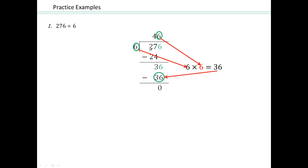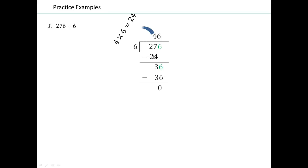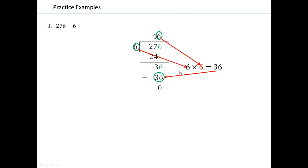No matter how many digits it is, you have to use the same process. Let's quickly review what we did. 6 times what gets closest to 2? Nothing, so that's a 0. 6 times 4 is 24 — do the subtraction, bring the 6 down. 6 times 6 is 36, which goes down here, and then the difference is 0.